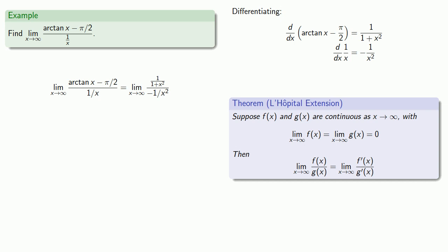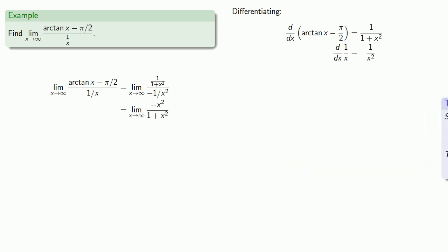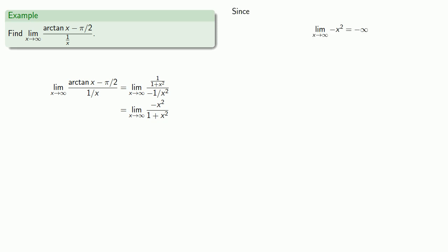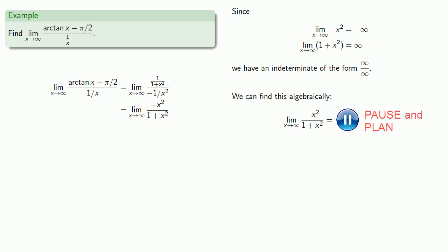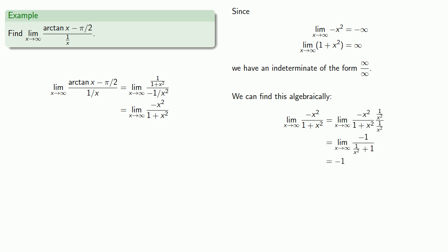Let's do a little bit of algebraic cleanup. We notice that as x goes to infinity, the numerator −x² goes to −∞ and the denominator goes to +∞, so we have an indeterminate form of the type ∞/∞. We've dealt with this type of limit before — we can find this limit algebraically, which gives us the value of the limit.